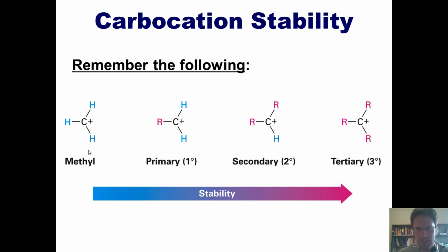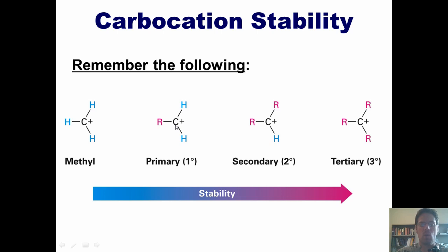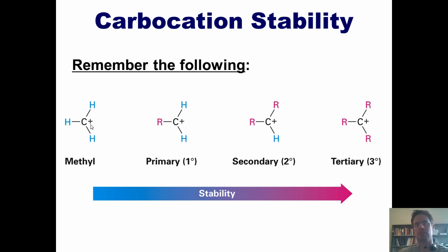A tertiary carbocation is one in which the positively charged carbon is bonded to three different carbons. A secondary is one in which the positively charged carbon is bonded to two carbons. A primary is one bonded to one carbon. And a methyl is where it's bonded to just hydrogens. Tertiary carbocations are the most stable, followed by secondary, followed by primary, followed by methyl. I once heard an organic chemistry professor joke that primary and methyl carbocations are so unstable that they may only really exist in extreme conditions like those found in interstellar space.